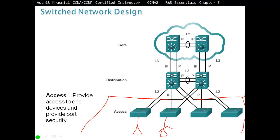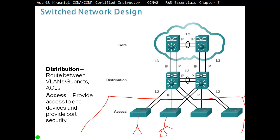Access layer switches all connect to the distribution layer switches. Distribution layer switches are Layer 3 devices and they support routing as well as ACLs — Access Control Lists. As a packet comes into Layer 2, Layer 2 determines the correct port and which VLAN it belongs to. As it goes towards the Layer 3 device, the Layer 3 device checks the ACL — does it have permission to proceed? If it does, it determines what route to take to reach the destination.